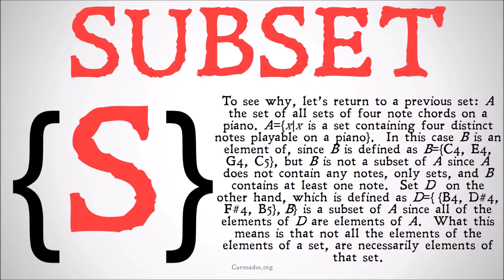To see why, let's return to a previous set A, which is the set of all sets of four-note chords on a piano. We can define A as {X | X is a set containing four distinct notes playable on a piano}. In this case, B is an element of A since B is defined as {C4, E4, G4, C5}. But B is not a subset of A, since A does not contain any notes — only sets of notes — and B contains at least one note and no sets.